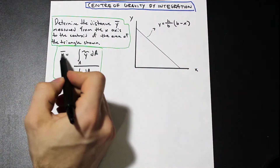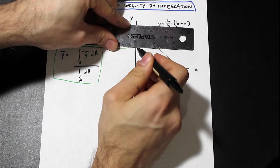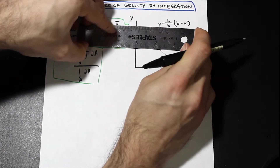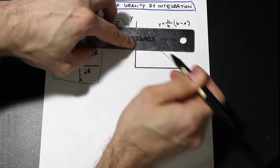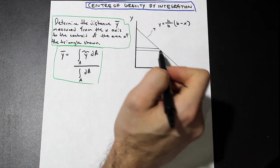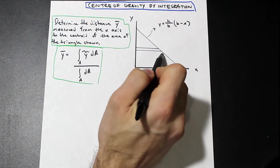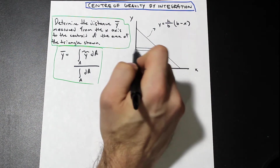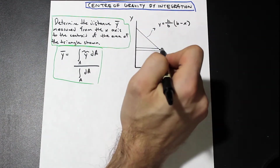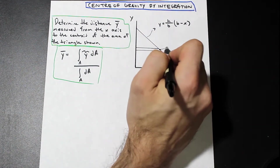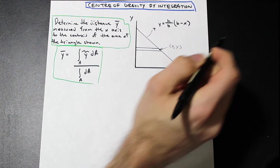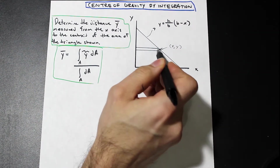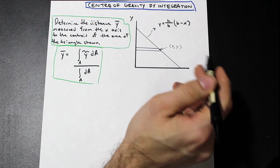Since we're trying to find y bar, we're going to draw a rectangle in the x direction — essentially a strip of the triangle. We're going to label it with a few different items. This point here is the boundary of the rectangle between the y-axis and the curve, and we're going to label it (x, y). So it's some arbitrary point that is the boundary between this rectangle and the end of the curve, and it's located at point (x, y).